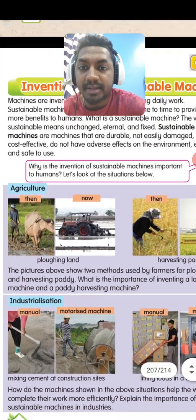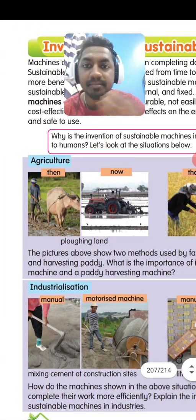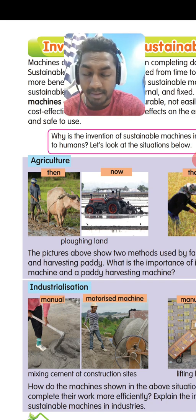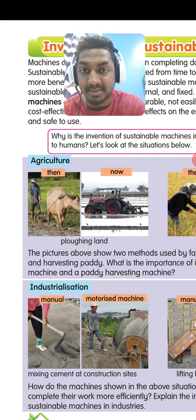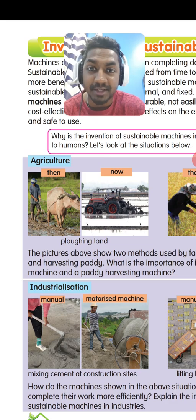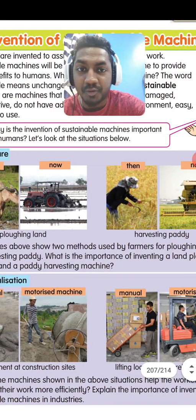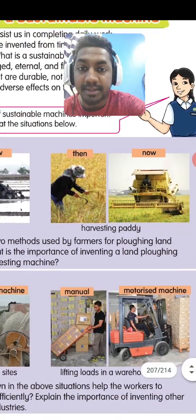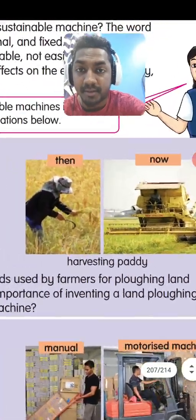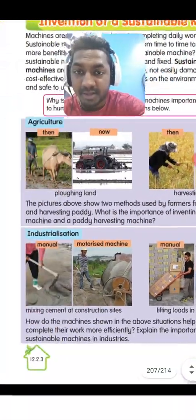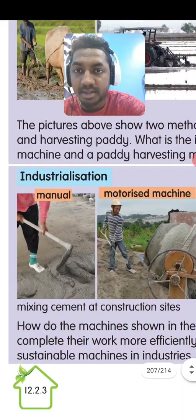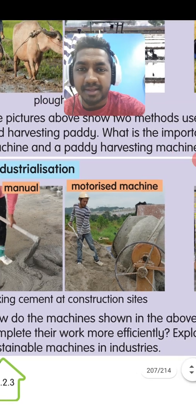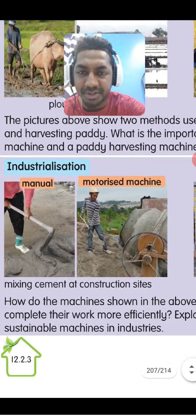Let's look at agriculture — then and now. For ploughing land, last time they used a cow; now they are using a tractor. You can also see the difference in the material used for harvesting paddy. In industrialization, manually they used the hoe, and now they're using a motorized machine.